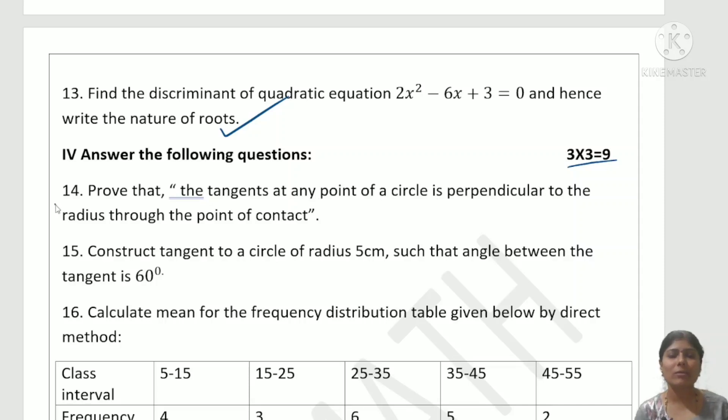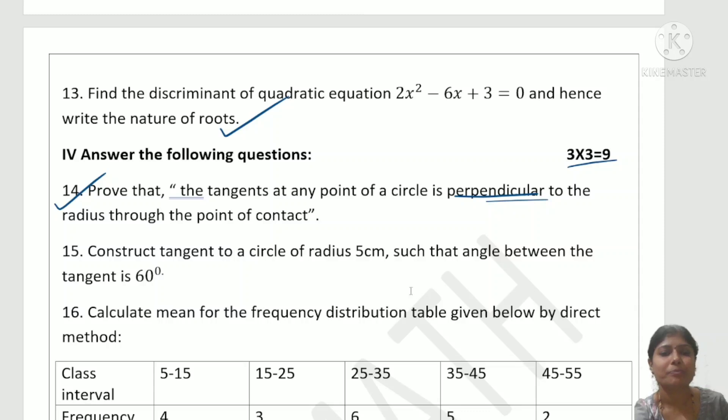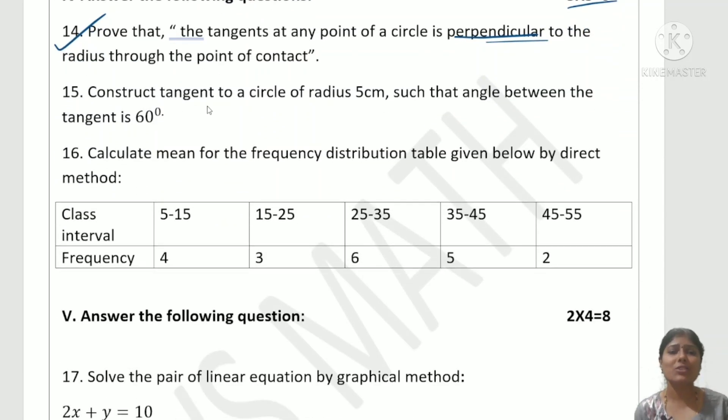Three marks: One circle theorem - the tangent at any point of a circle is perpendicular to the radius through the point of contact. You need to write and solve this theorem. Next, construct a tangent to a circle of radius 5 cm such that the angle between the tangents is 60 degrees. Calculate the mean for the frequency distribution table given below by direct method.